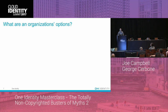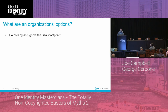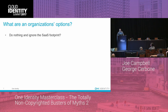So if I put on my IAG hat and think about how we're going to handle cloud, the question becomes: what are my options? Do I do nothing and just ignore the SaaS footprint? No, that's not really a choice — we have to govern these things. The level of governance is not going to be one size fits all; some SaaS platforms will have very little touch, and some may fly under the radar. But broadly as a strategy, ignoring SaaS is not an option.